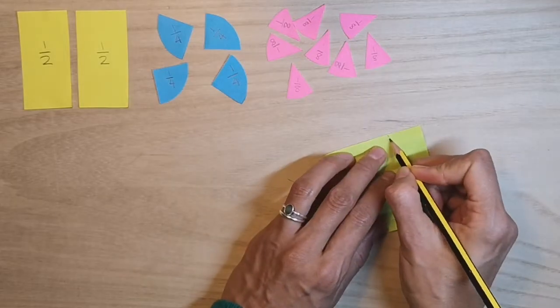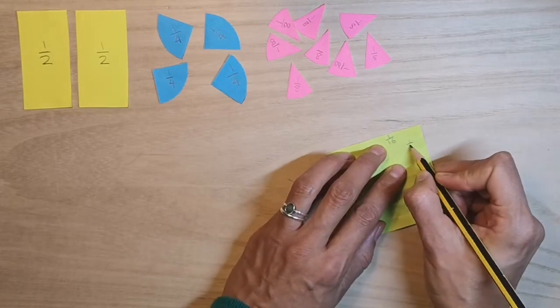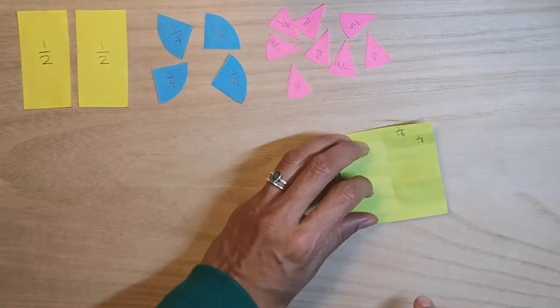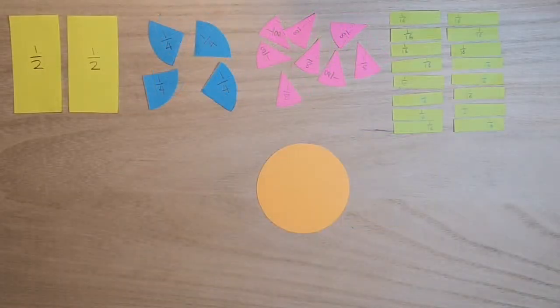So I'm going to label that now. A sixteenth. I'm going to continue labeling them and cut those out.